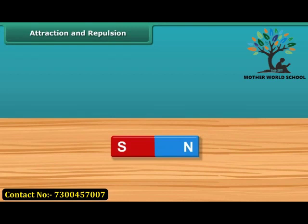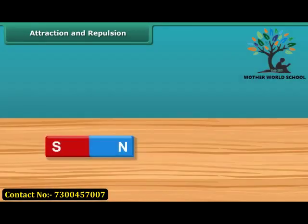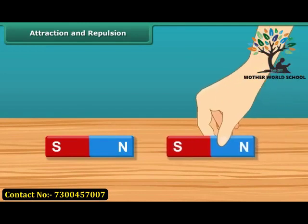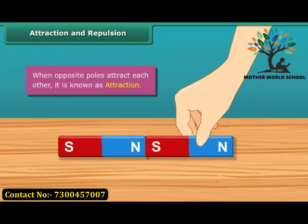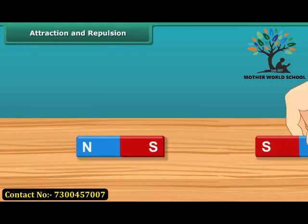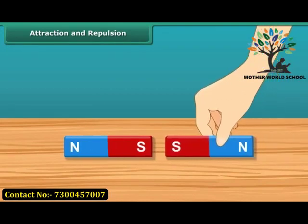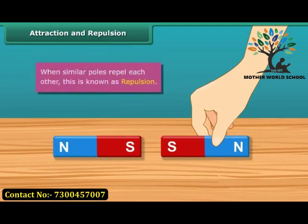Now let us look at the attraction and repulsion properties of magnets. When the south pole comes in contact with the north pole, they get attracted to each other — this is known as opposite poles attracting each other. When the south pole comes in contact with another south pole, they repel each other — this is known as similar poles repelling each other.